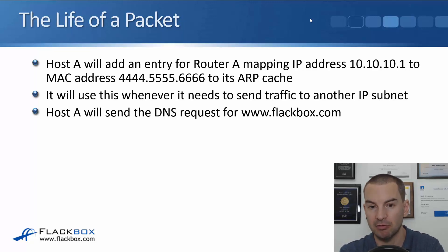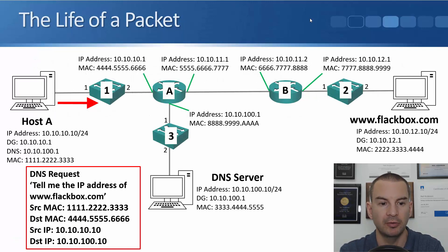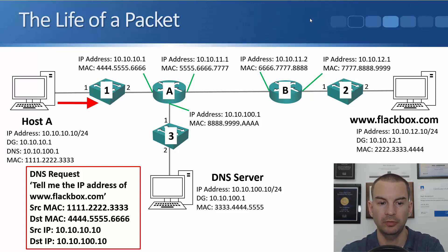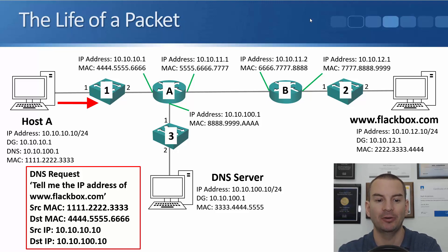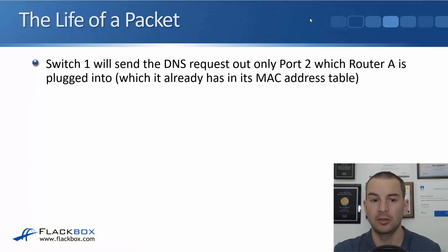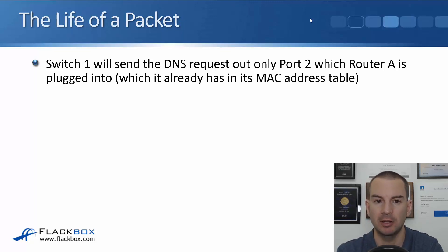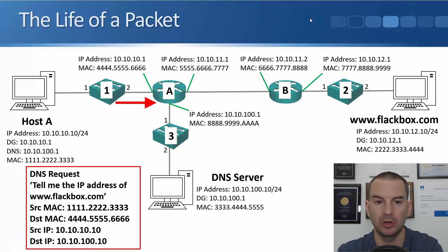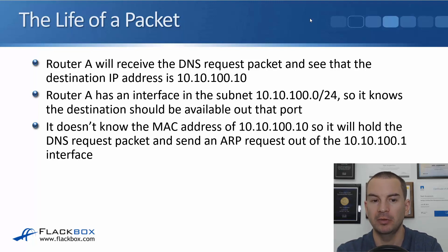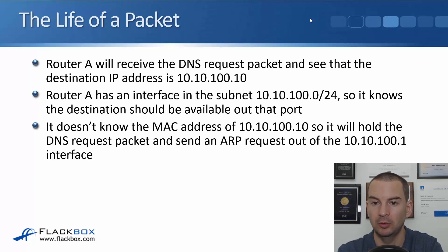Host A then sends the DNS request for www.flackbox.com. The DNS request asks for the IP address of www.flackbox.com, coming from source MAC 1.2.3 on Host A going to Router A's MAC 4.5.6, source IP 10.10.10.10, destination IP 10.10.100.10. That is unicast traffic. Switch1 sends the DNS request out only port 2 where Router A is plugged in. Router A receives the request and sees the destination IP address is 10.10.100.10, the DNS server. Router A has an interface in subnet 10.10.100.0/24, so it knows the destination should be available out that port.